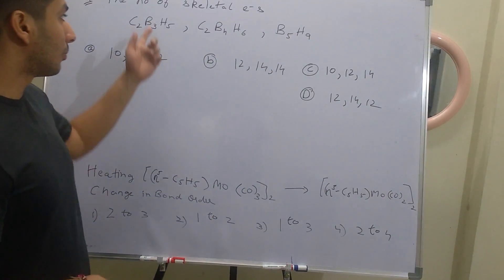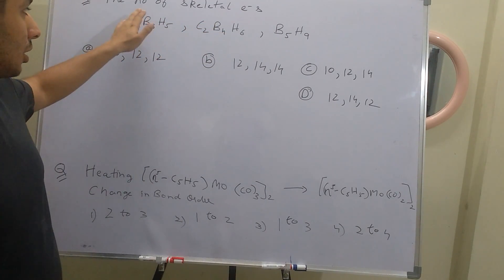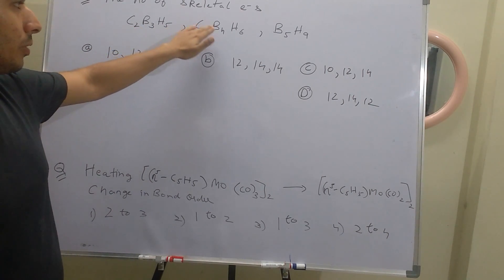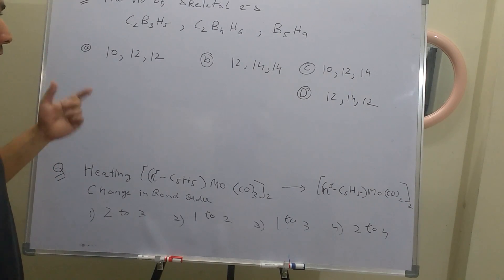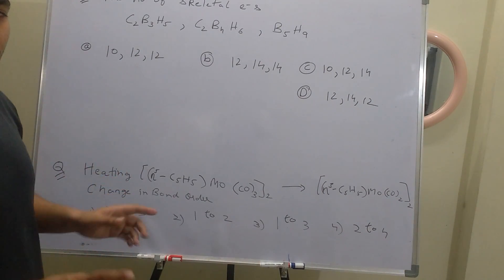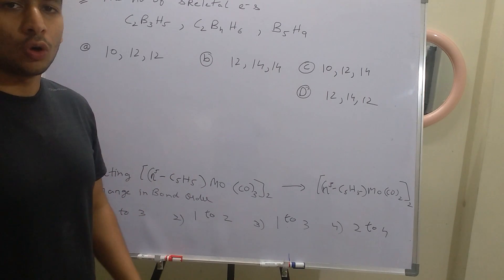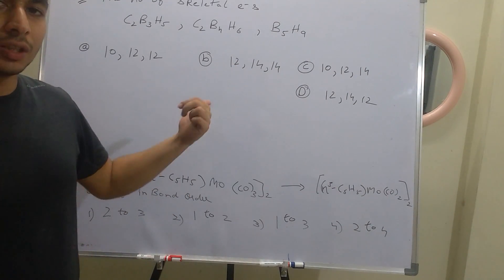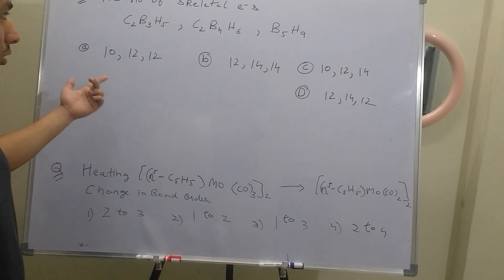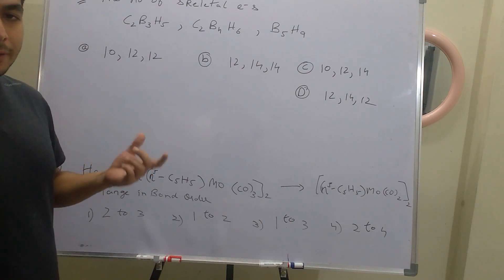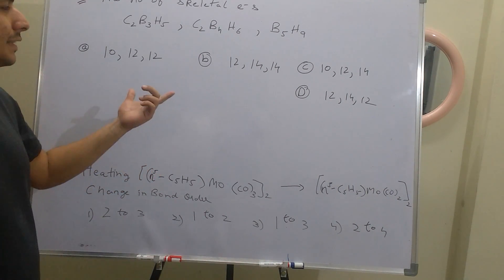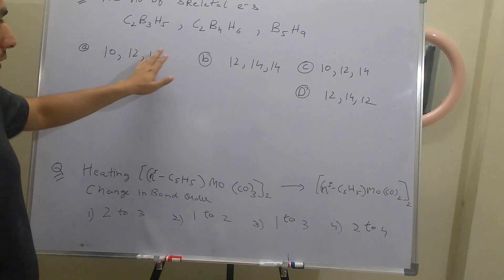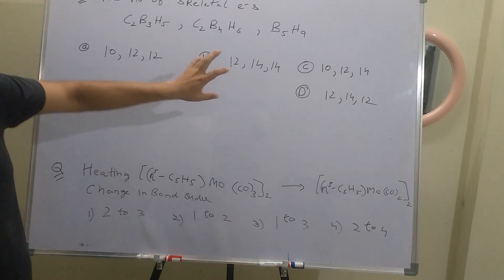This question asks for the number of skeletal electrons. We are given three compounds: C2B3H5, C2B4H6, and B5H9. If you haven't seen my video on skeletal electron pairs, I will attach a link here so you can watch that video and then come back. Now, looking at the options, you can see there is 12 in one option — let's identify them before solving.